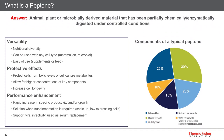Peptones are so widely used in bioprocessing because of their rich nutritional composition. A typical peptone contains amino acids, peptides, vitamins, carbohydrates, minerals, and trace elements — all components that mammalian cells and microbes love. Therefore they serve as an optimal nutritional source for cells.